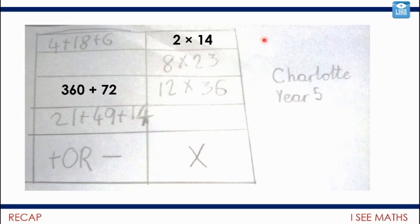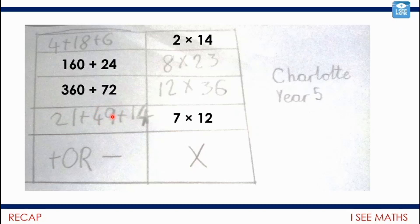So for 8 multiplied by 23, of course there's different ways this could be split up. I went for 160 — 20 lots of 8 — and then 3 eights, 24. 160 plus 24 was my version. And then for 21 plus 49 plus 14, I was thinking, which number is a common factor of all 3 numbers? And I thought, 7. How many 7s? Well, 3 sevens there, 7 sevens there — that's 10 in total — and then 2 more there: 12 lots of 7. So Charlotte, thank you very much.